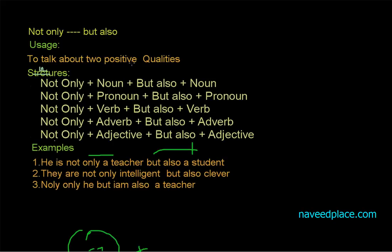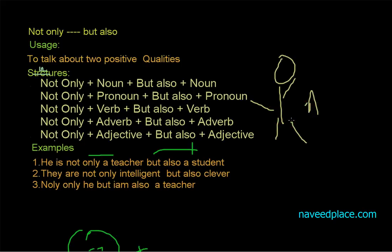What is that difference? Here we are not only saying 'teacher' — we are saying that a person, for example named Ali, he is not only a teacher but also a student. Here we are saying: okay, he is that, but he is also that.